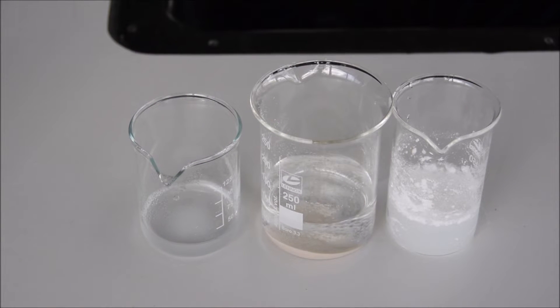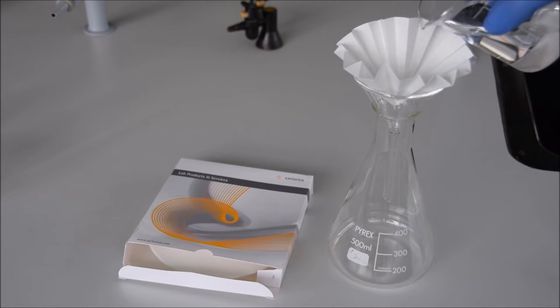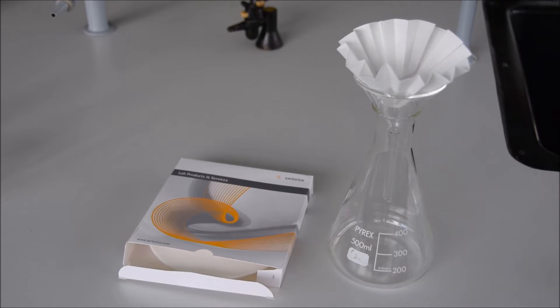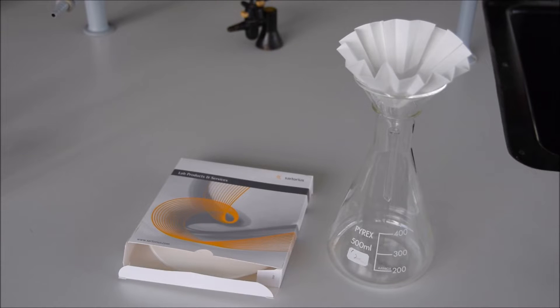The easiest one to separate with a plain funnel and a fluted filter paper is the sand and water, or the heavy material we want to leave behind and the liquid we want to separate out. A fluted filter paper works really well here because the liquid can travel very quickly through it because it has such a large surface area.